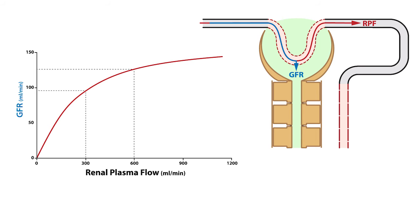Finally, if we increase renal plasma flow from 600 to 900 milliliters per minute, we see an even smaller increase in GFR from 125 to 140 milliliters per minute. Over this range in renal plasma flow, the rate of increase in GFR is reduced by half compared to the previous change in renal plasma flow. This nonlinear relationship between GFR and renal plasma flow has a nonlinear effect on filtration fraction.